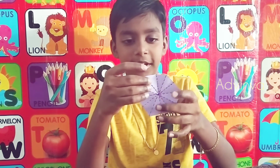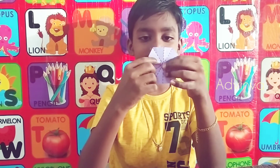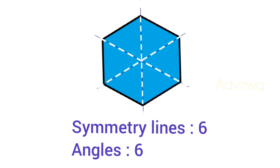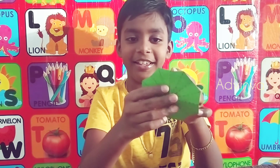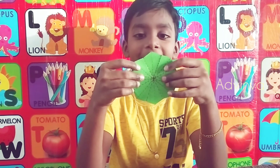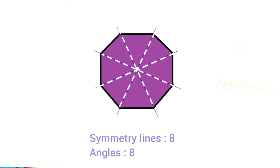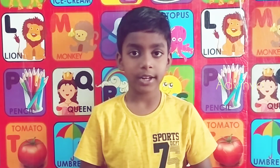Now I have a hexagon. The hexagon has six symmetry lines. And here is the octagon — I think it has eight symmetry lines, yes, it has eight symmetry lines.